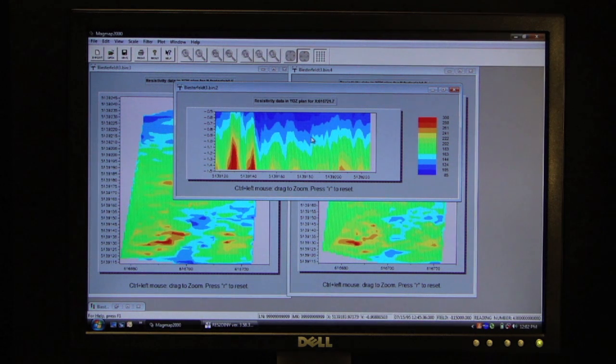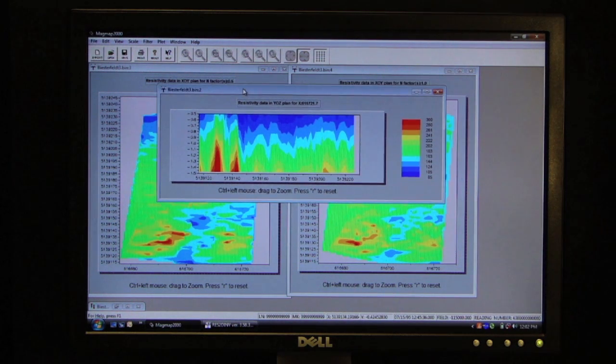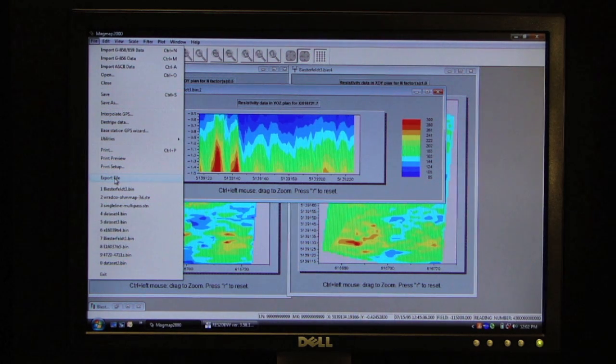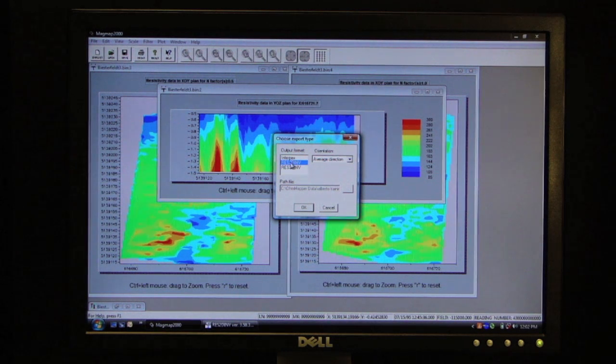Right now we are in apparent resistivities, and the vertical depth scale is actually in space. So what I'm going to do is I go to File, and we're going to export this file out to another inversion program called Res2D Invert. I select Res2D Invert as my export target and click OK.